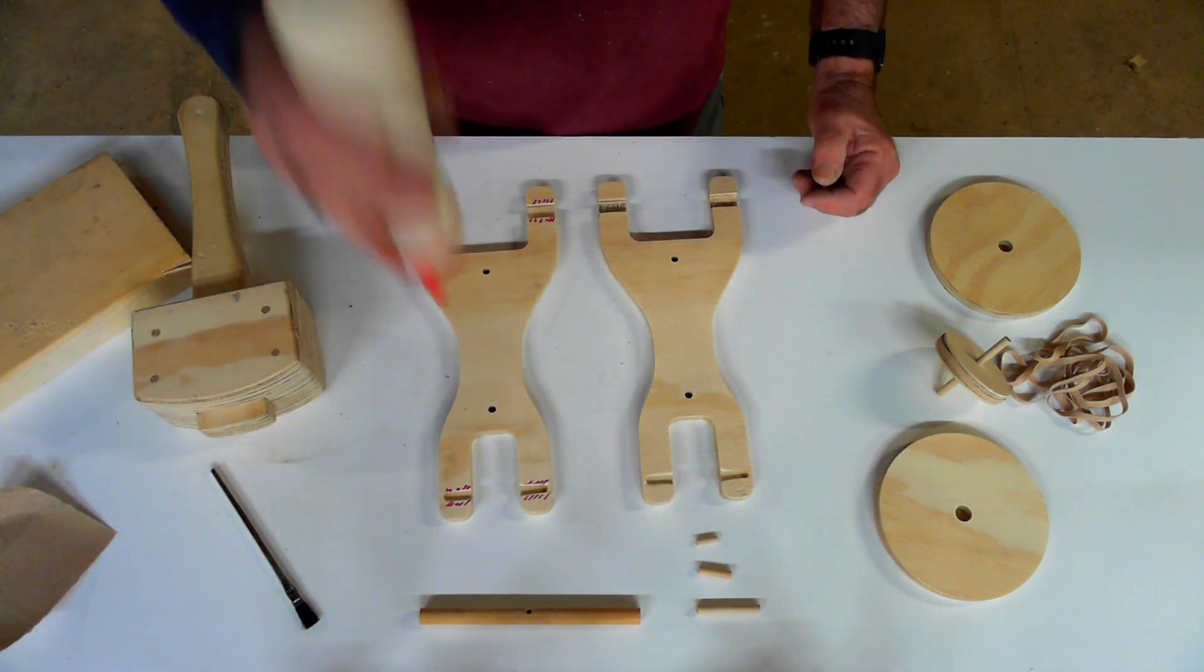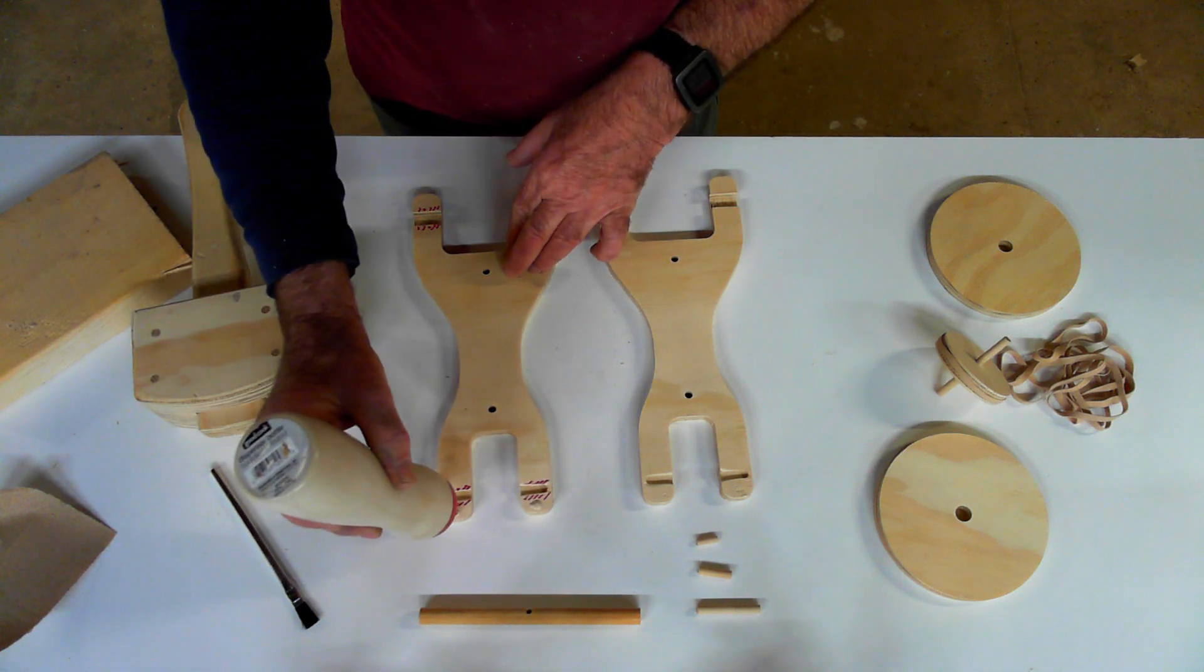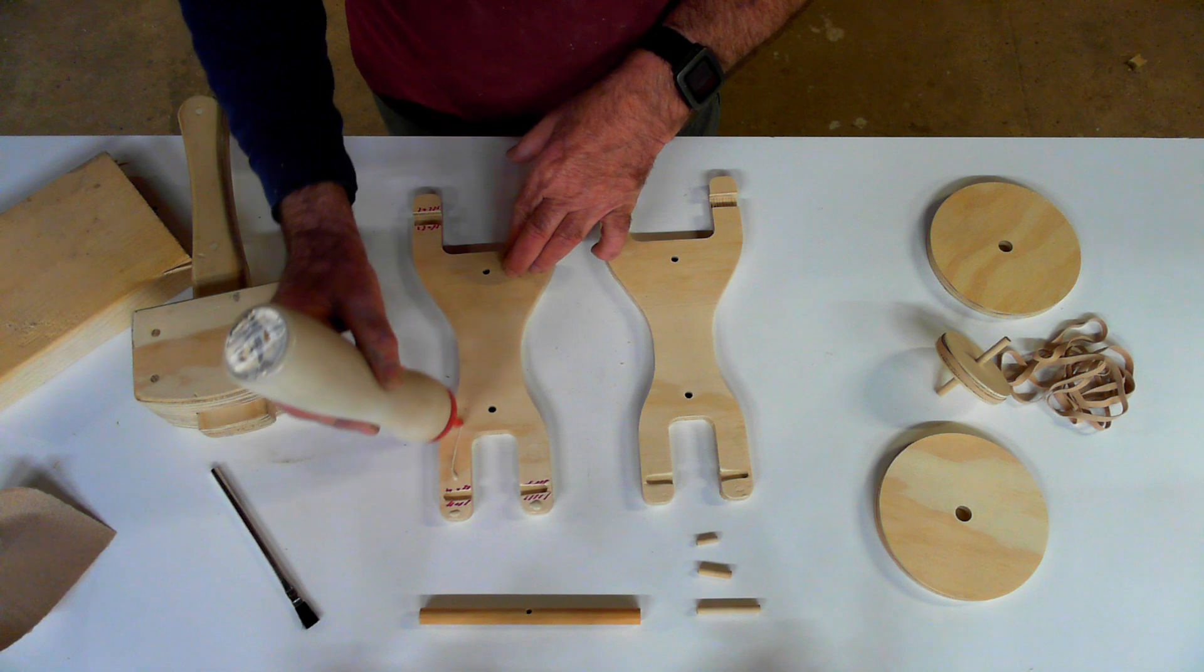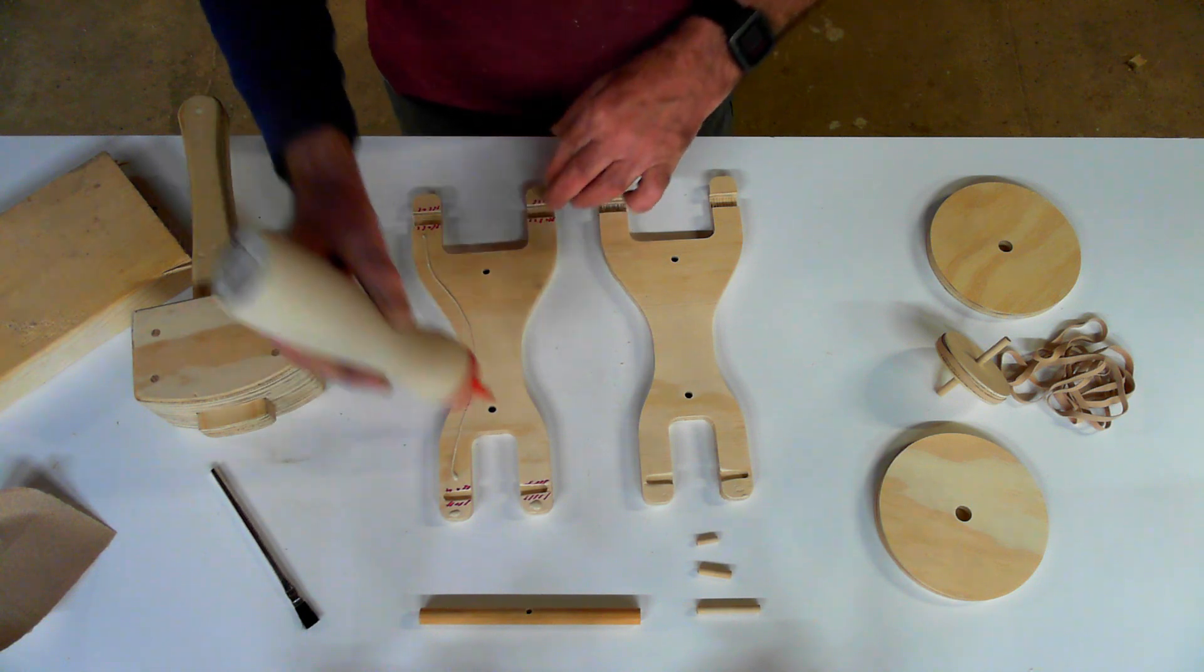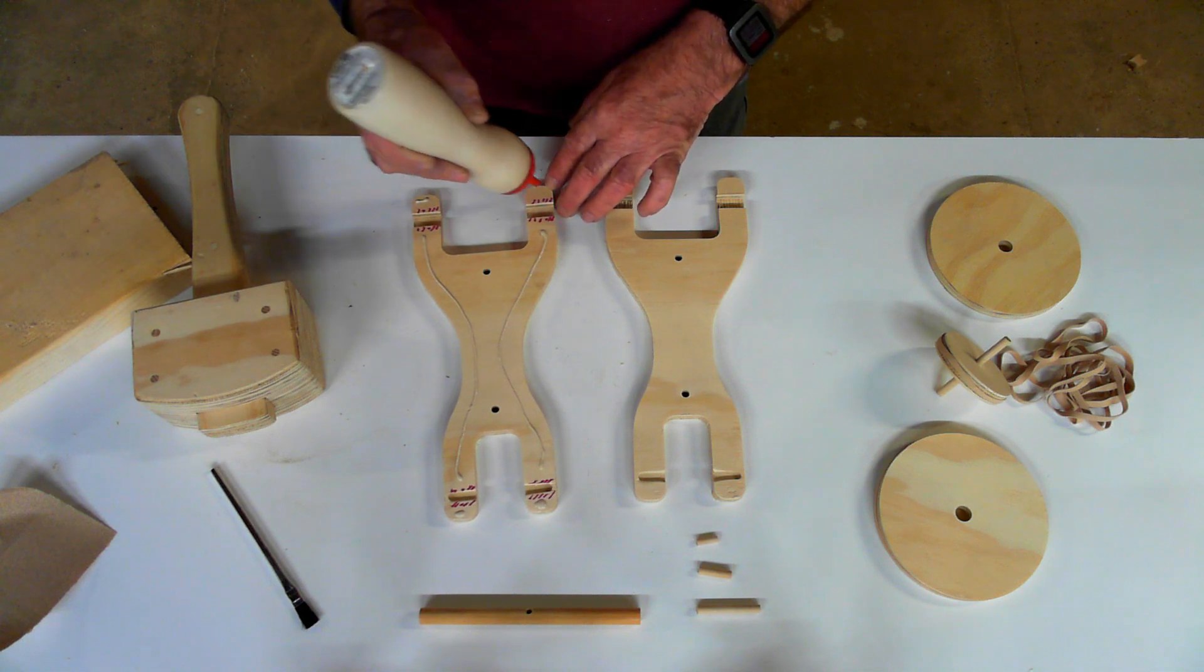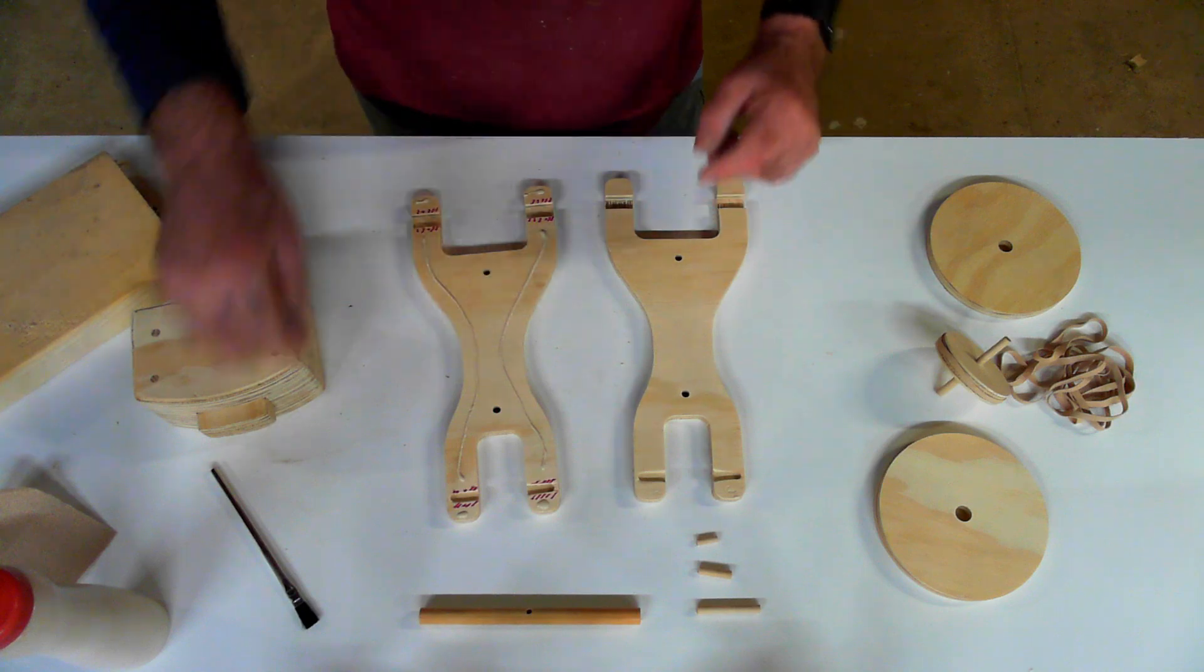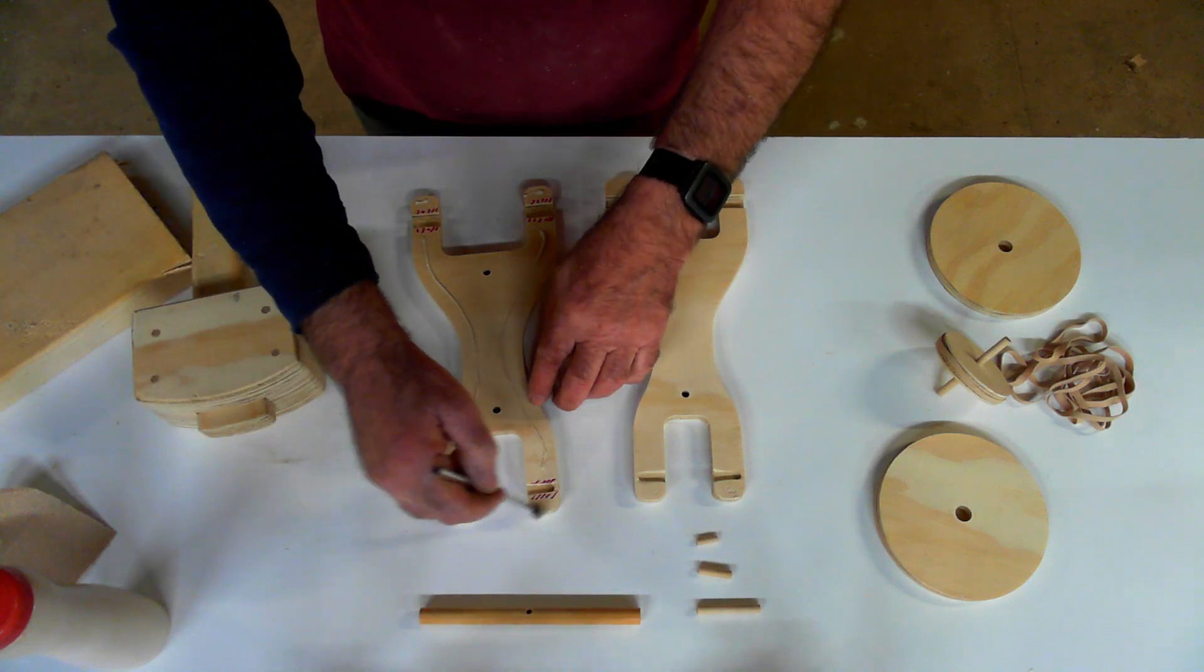I'll use this Titebond glue and put just a little dot on these two ends. Be careful with that. And then sort of a squirt down here, a squirt down here. You can build them without the glue if you want, especially if your dowels are tight.